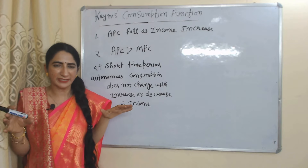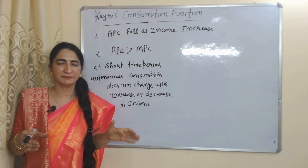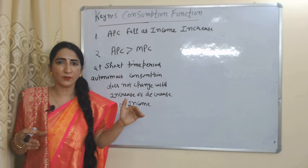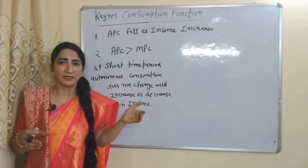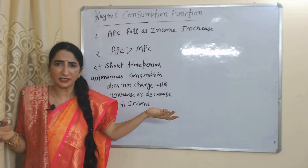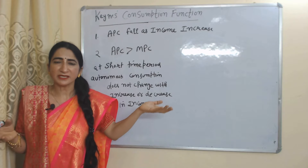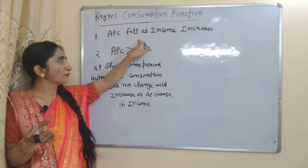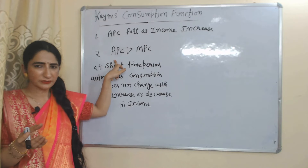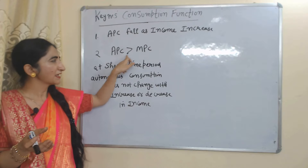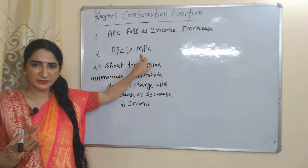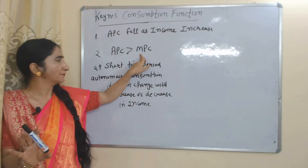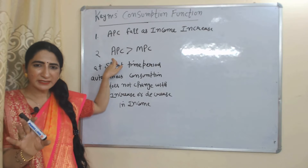According to Keynes, after a certain time period, increase in consumption will be less than increase in income. If increase in consumption is less than increase in income, then obviously our APC will fall as income increases. APC means average propensity to consume. So, according to Keynes, APC falls as income increases. The second point is that according to Keynes, MPC will be less than APC.